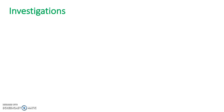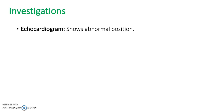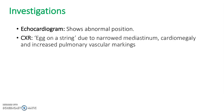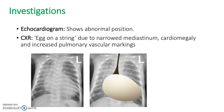What investigations would we do to look into this further? We could do an echocardiogram — this would show the abnormal position of the arteries. A chest x-ray would show an egg on a string appearance due to the narrowed mediastinum, cardiomegaly, and increased pulmonary vascular markings. See how it looks like an egg on a string?